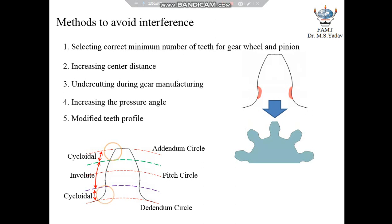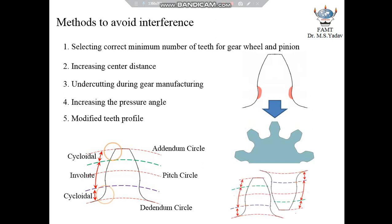We know that there are no chances of occurrence of interference in a cycloidal tooth profile. Thus, the profile of the tooth consists of three curves — cycloidal at the top and root, and involute at the middle portion. The epicycloid curve is preferred at the top of the tooth and the hypocycloid at the root of the tooth. After changing the profile, the gear tooth in mesh looks like this. The epicycloid at the top of the tooth comes in contact with the hypocycloid at the root of the meshing gear tooth, and vice versa.